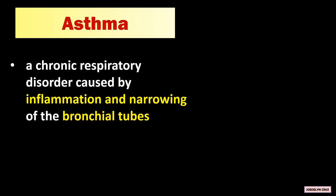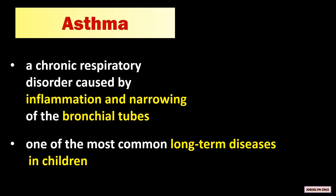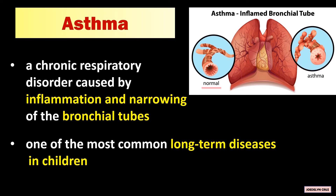Asthma is a chronic respiratory disorder caused by inflammation and narrowing of the bronchial tubes. It is one of the most common long-term diseases in children. In this picture, this is the normal bronchial tube that is not inflamed, while this is the bronchial tube with asthma — it is swollen and narrow.